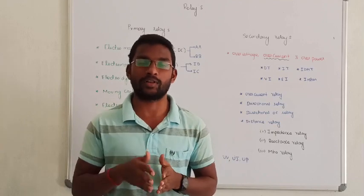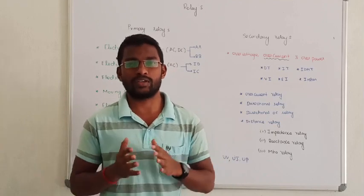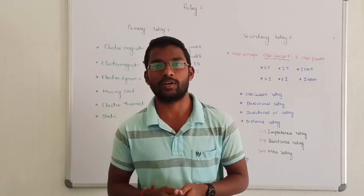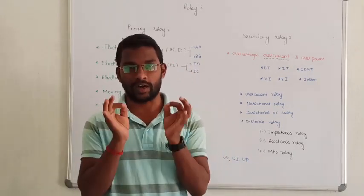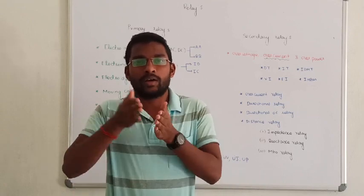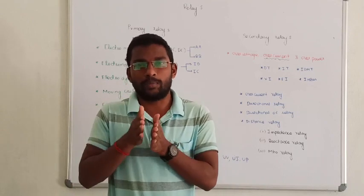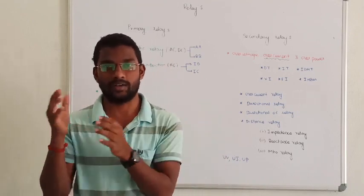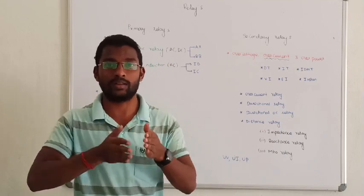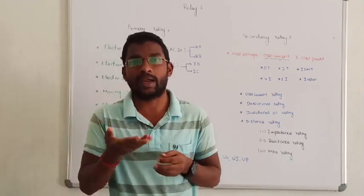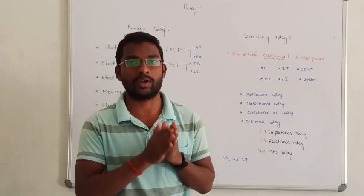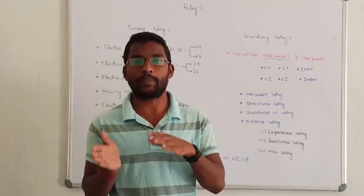The relay operator - that is the circuit breaker. Usually the circuit breaker is separate. We can see first: the relay operator. The relay operator is connected to the power system to identify abnormal conditions.